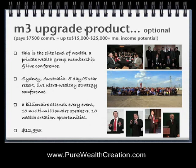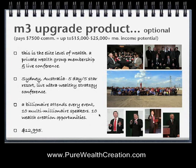The M3 upgrade product is optional as well. It pays a $7,500 commission, with up to $15,000 to $25,000 a month income potential. This is the elite level of wealth — a private wealth group membership and also a live conference. The next one is in Sydney, Australia: a five-day event at a five-star resort. A billionaire will show up at this event, along with 10 multi-millionaire speakers and 10 wealth creation opportunities. You can see some of our speakers here, as well as attendees from our last event. We have a private black-tie event at the end as well. This product is $12,995.